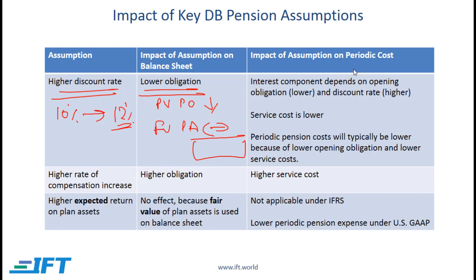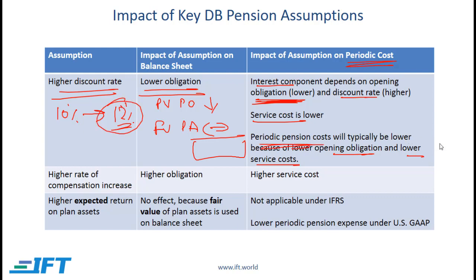In terms of pension cost, recall that we have an interest component and a service cost component, which are the two most important in the context of the discount rate. The service cost is clearly going to be lower with a higher discount rate. The interest component depends on the opening obligation multiplied by the discount rate. Using a higher rate means the opening obligation is lower, though it's being multiplied by a higher rate. Generally, the periodic pension cost will be lower because of the lower opening obligation and lower service costs.